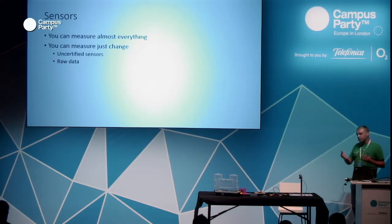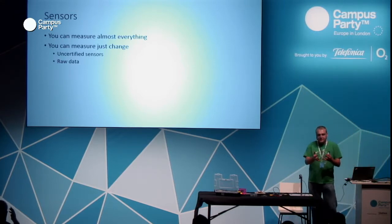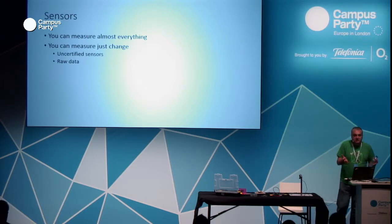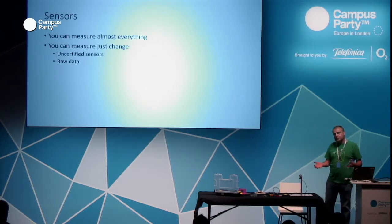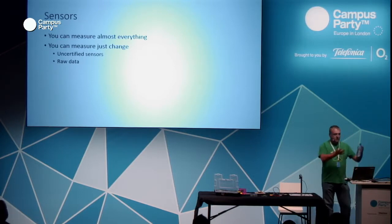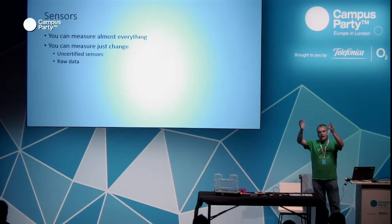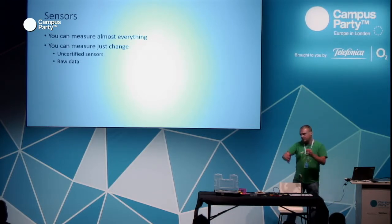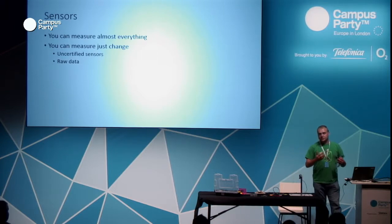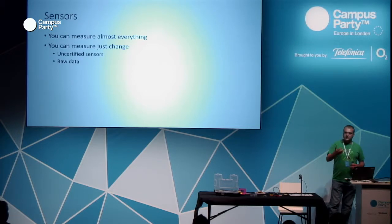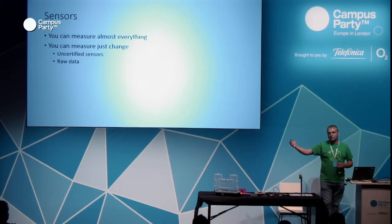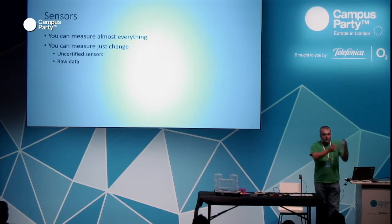Sometimes you don't need certified sensors. If you want to use your data in some official discussion with the government, they might say those sensors have no certification and refuse to engage. But sometimes you just need to measure the change — you look for a change before and after some action. For example, we're using this for measuring the quality of highway D1 — we did measurements before reconstruction and plan to do measurements after, expecting to see improvement.